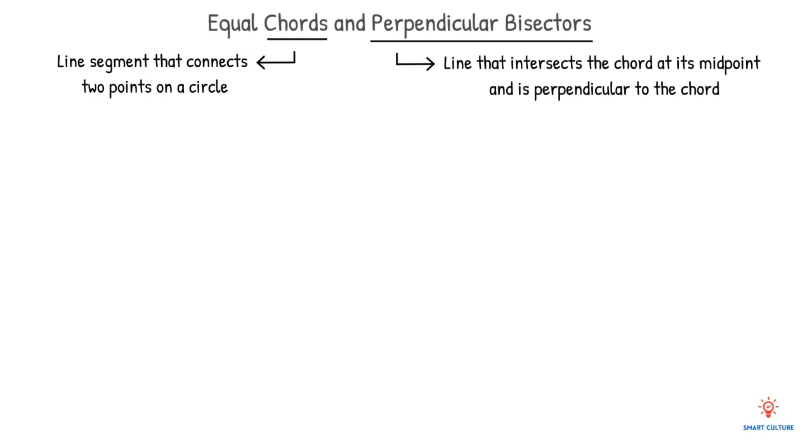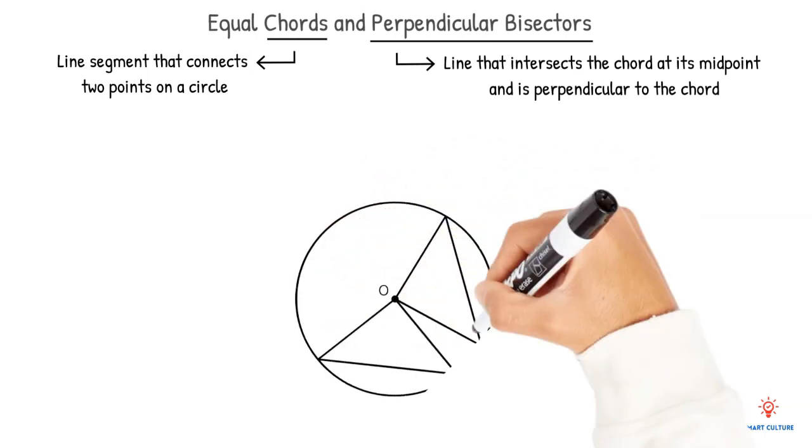Now, the equal chords and perpendicular bisectors property states that if two chords in a circle are equal in length, then their perpendicular bisectors will intersect at the center of the circle.